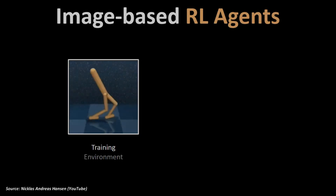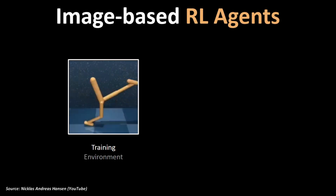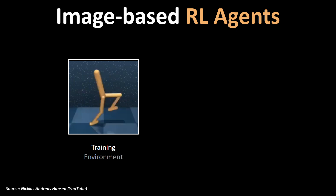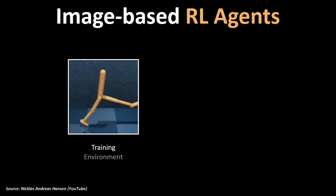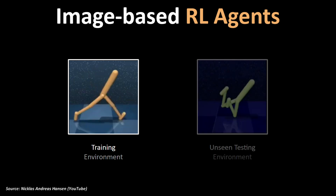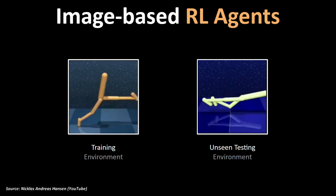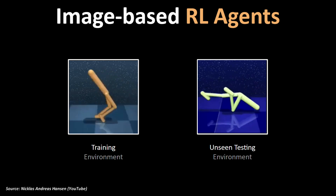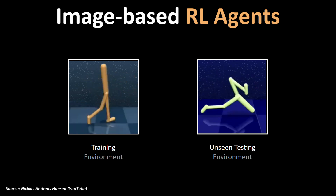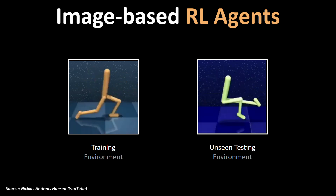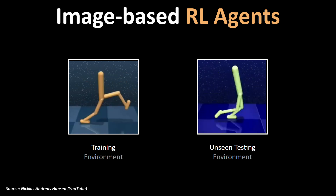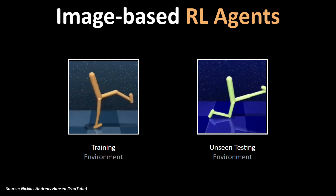One big limitation of image-based reinforcement learning agents is that their performance drops a lot if significant visual changes are made to the input from training time to deployment time, even if the core task remains the same.